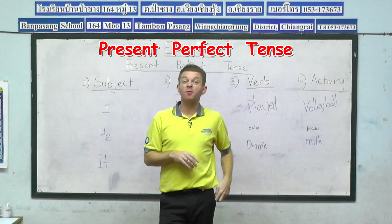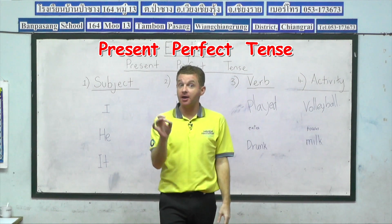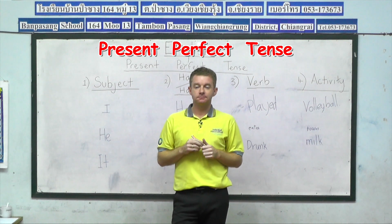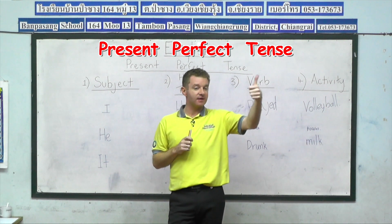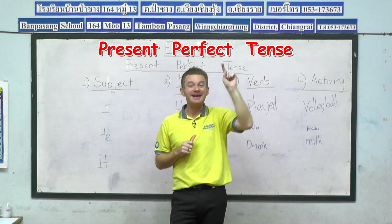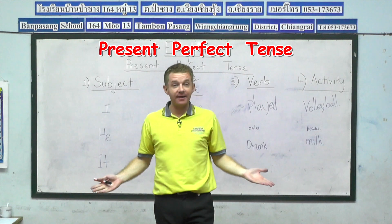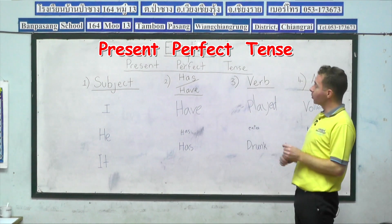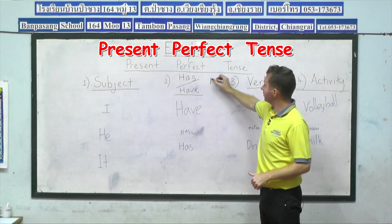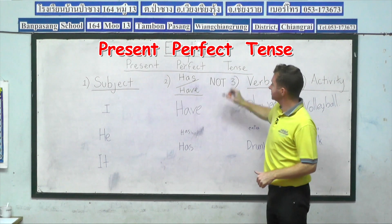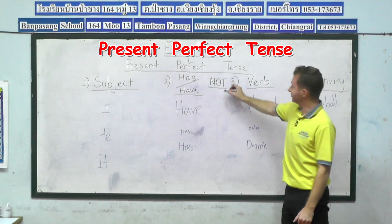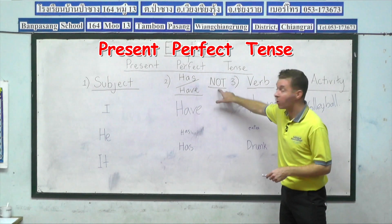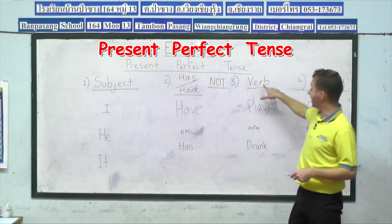So that was a recap of the previous lesson when we did affirmative sentences in the present perfect tense. Can anybody guess what we're going to do today? The last lesson we did affirmative sentences — positive. Today we're going to do? Negative. Correct. And to do a negative sentence it's very easy — all we need to do is add one word: not. We add the word not between has or have and before the verb.